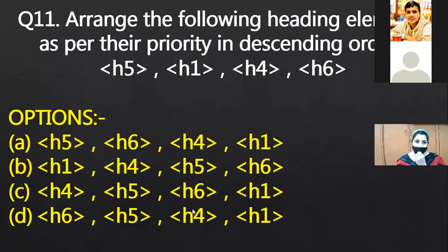Arrange the following heading elements as per their priority. In descending order. So four tags are given: H5, H1, H4, H6. So you have to write in the descending order. That is H6, H5, H4, H1. That is the D part. H1 humara sab se highest hai. Then H2 lowest, H3 usse lowest. Last one is the H6.